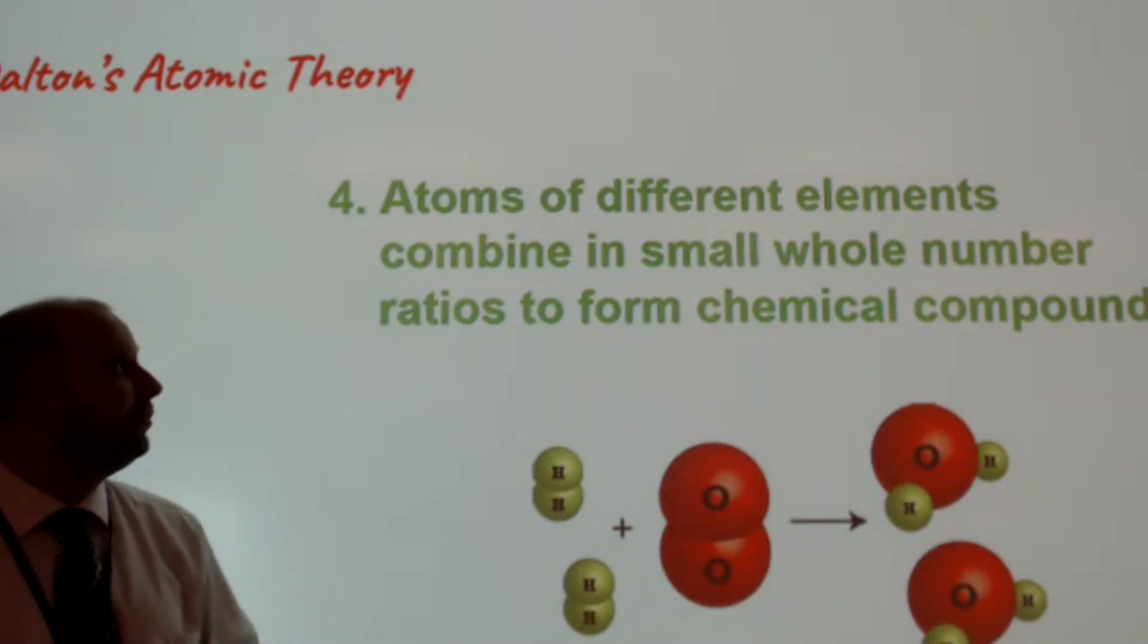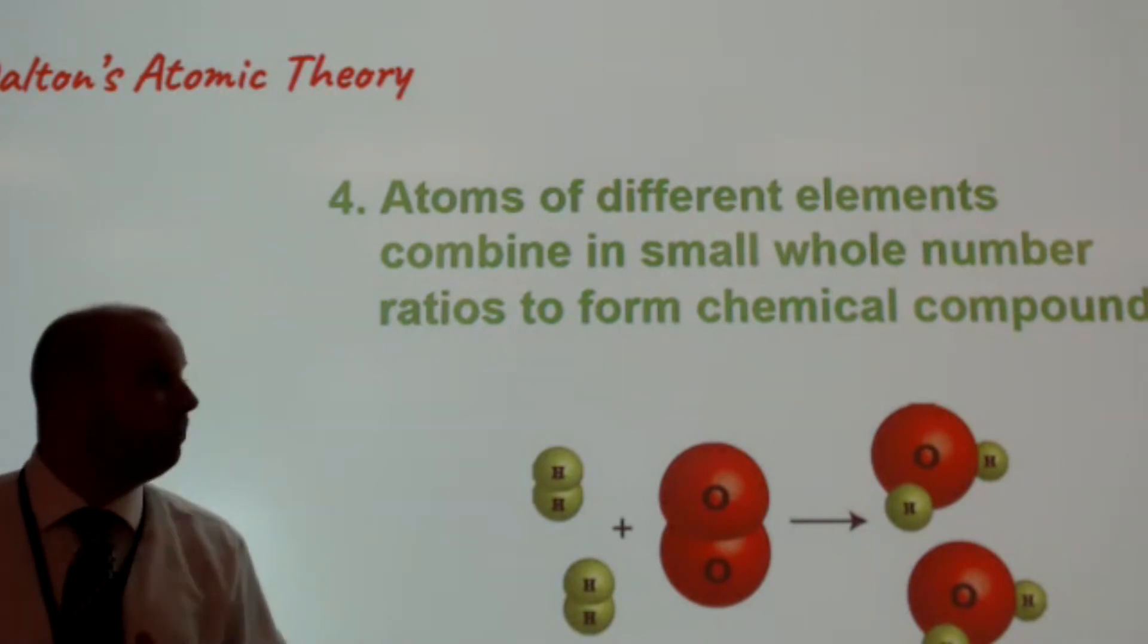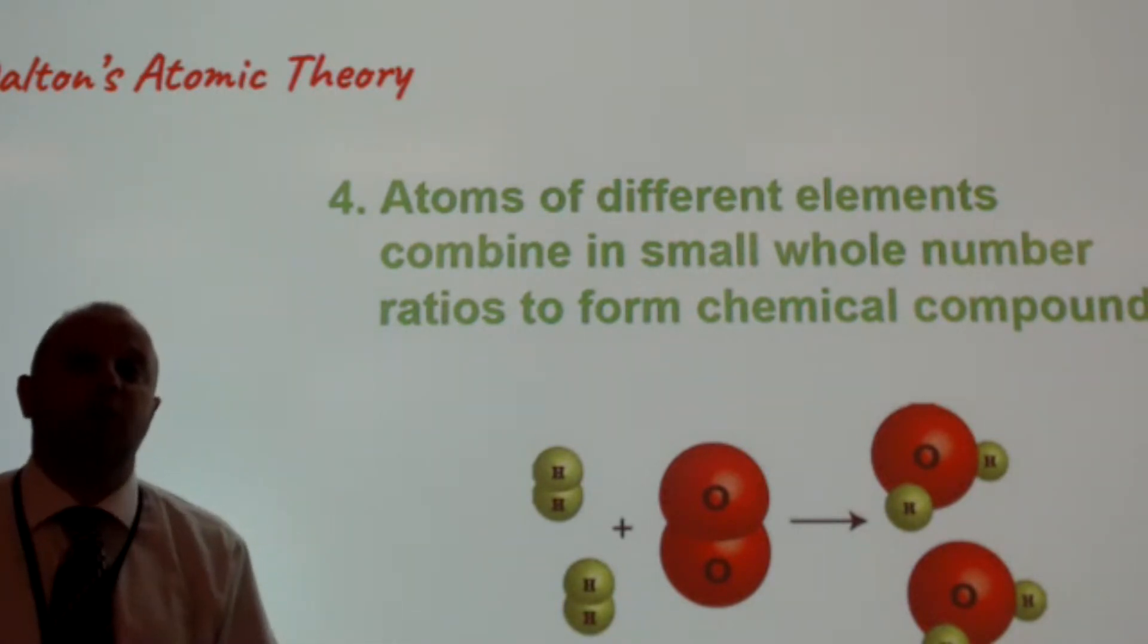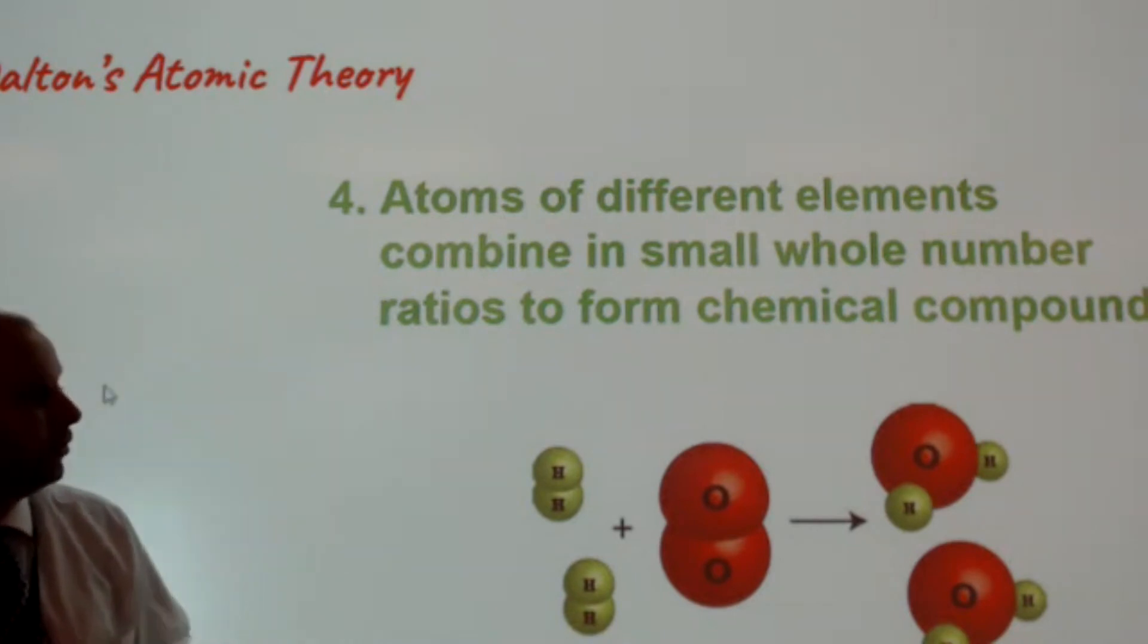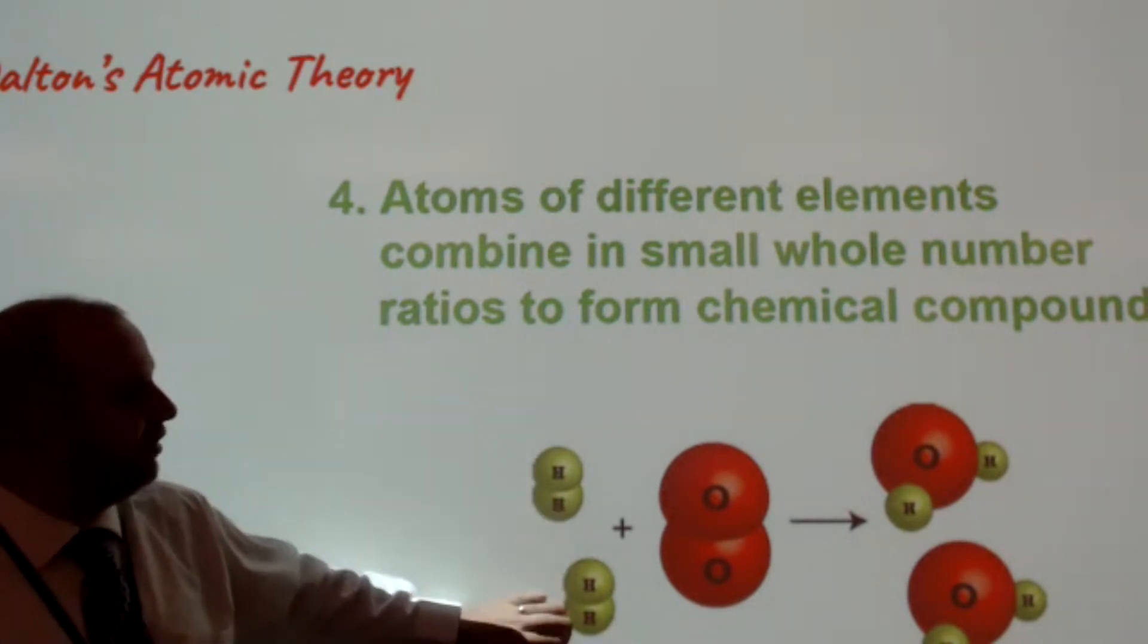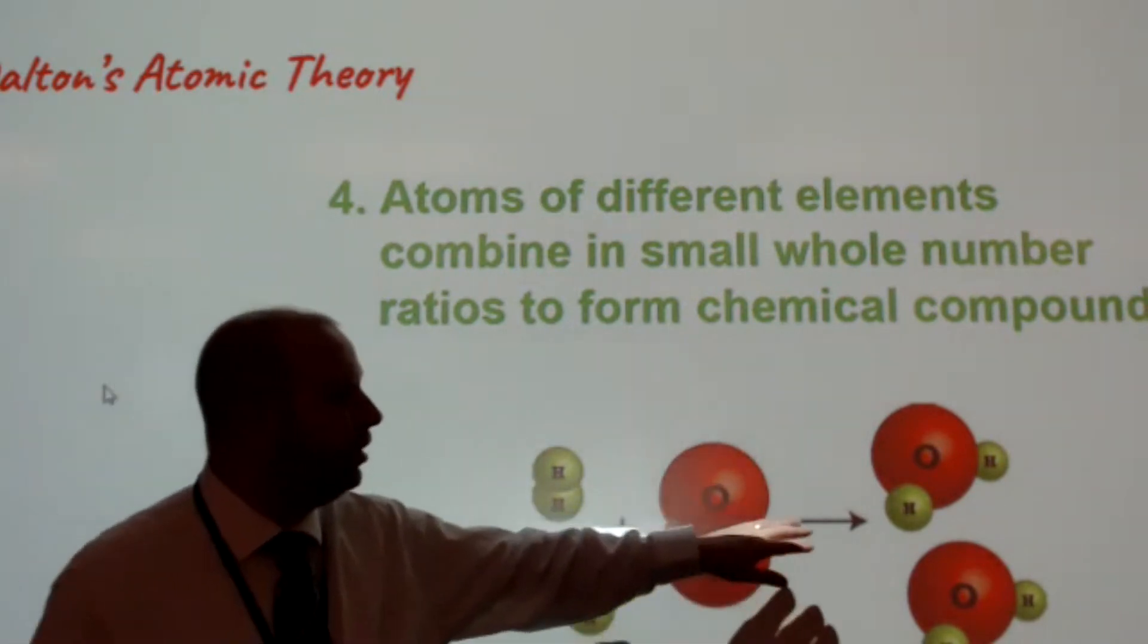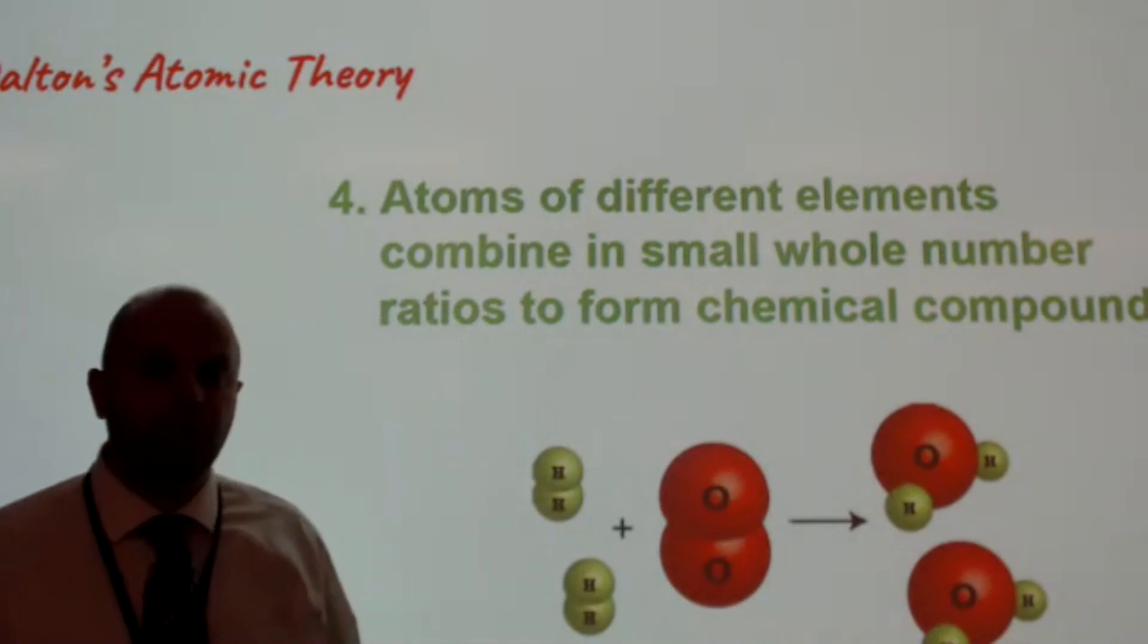Dalton's fourth postulate states that atoms of different elements combine in small whole number ratios to form chemical compounds. This is very similar to what we just saw earlier in the law of multiple proportions. So if you notice, we have a molecule of hydrogen, in fact two molecules of hydrogen, combining with a molecule of oxygen, forming two molecules of water.